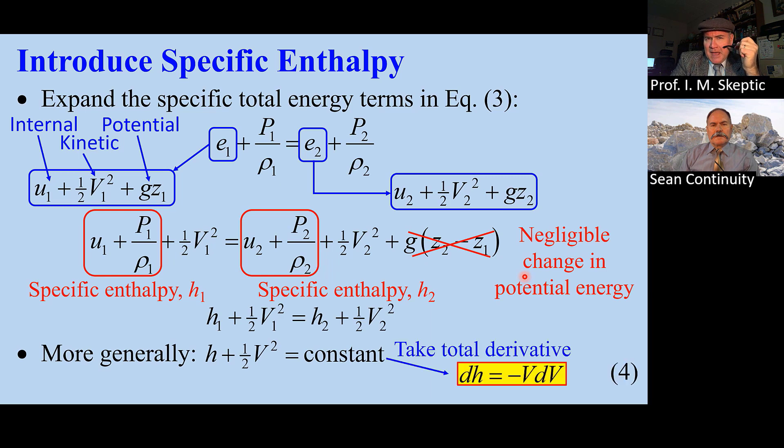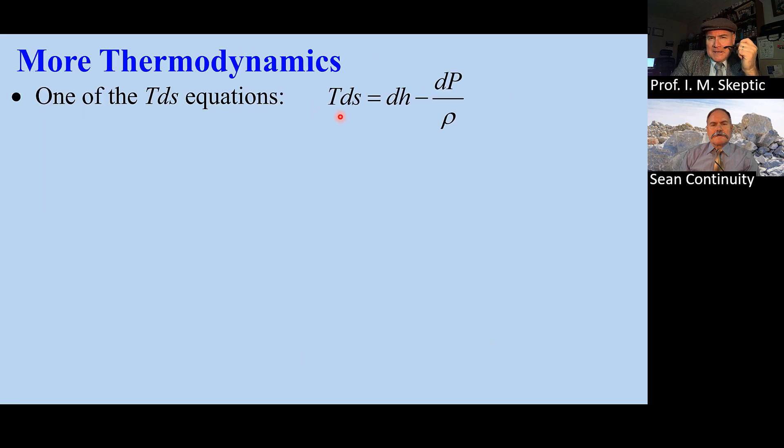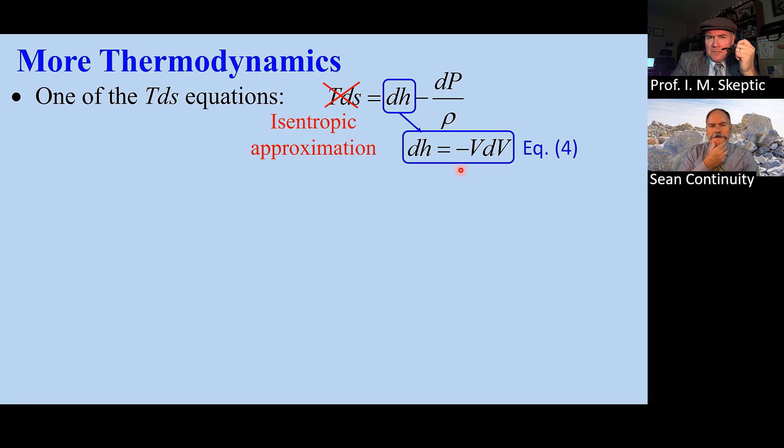When we take the total derivative, we get equation 4: dH = -VdV. Now we use one of the TDS equations, but we made an isentropic approximation and plug in equation 4. So we have dP/ρ = -VdV.